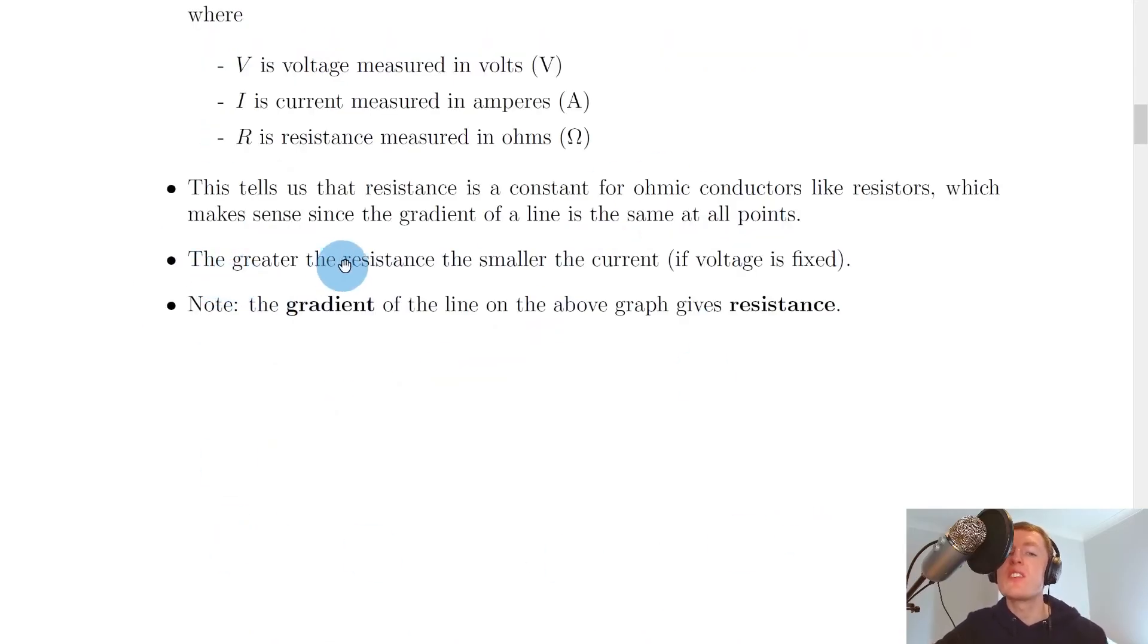The greater the resistance, the smaller the current if voltage is fixed. So if the voltage stays the same, we should expect that as resistance goes up, the current goes down. And just to help you visualize this, I'm going to show you a quick simulation.